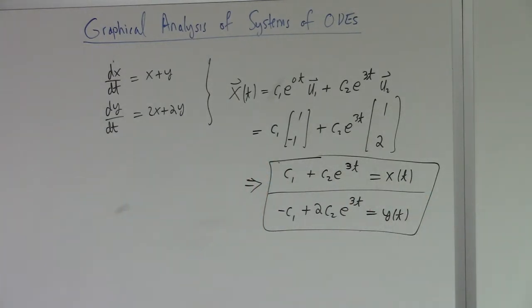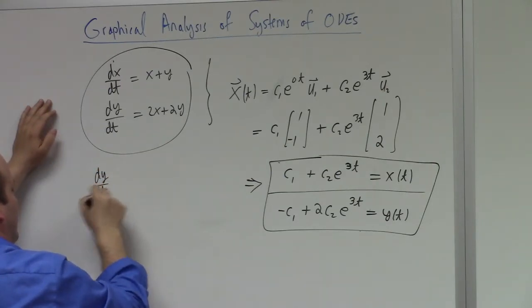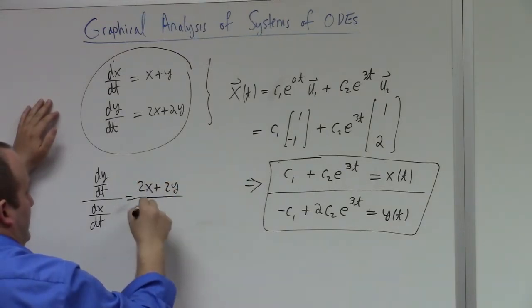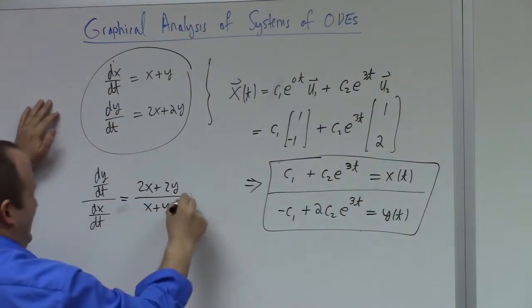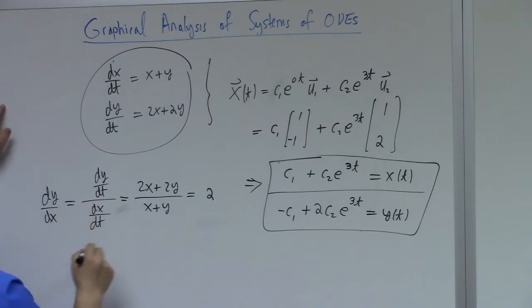I suppose you could eliminate the time to find the Cartesian equation for this curve if you wanted. If we take dy/dt divided by dx/dt, what do we get? 2x plus 2y over x plus y. That's just 2, and this is dy/dx if you believe me. So the solution is y equals 2x plus a constant.